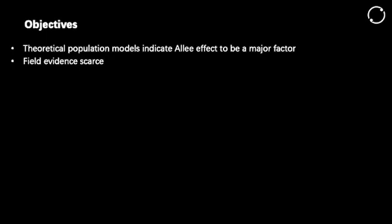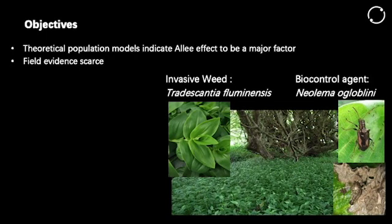Theoretical population models indicate that the Allee effect is present, but field evidence has been scarce. One of the aims of my PhD is to study the Allee effect and to see if it's present in this little beetle, which is Newlemma — a leaf beetle that has been released against Tradescantia in New Zealand. Tradescantia is, especially on the North Island, quite a big problem. It forms these thick carpet mats in the forest and just outcompetes the indigenous species.